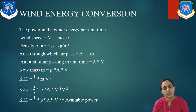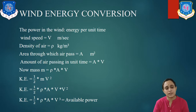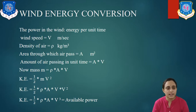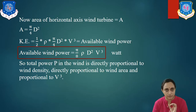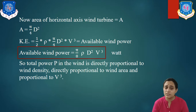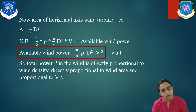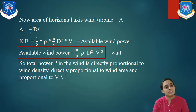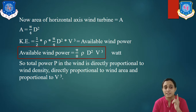Kinetic energy is equal to ½MV². Substituting M = ρAV, we get kinetic energy as ½ρAV³. This kinetic energy is exactly the same as the available power when we neglect all losses. Therefore, available power P = ½ρAV³. Since A = π/4 × D², we can write available power as P = (1/8)ρπD²V³.